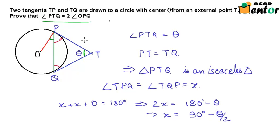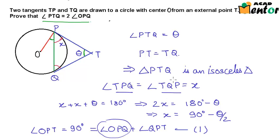Now this is the value of angle TPQ or angle TQP. Now we also know that angle OPT is equal to 90 degrees. This is because the radius and the tangent at the point of tangency form a right angle. So angle OPT is a 90 degree angle and we can see from the figure that angle OPT is nothing but angle OPQ plus angle QPT. And we just found out the value of angle QPT—QPT was x and we know the value of x. So from this particular equation, equation 1, we can easily find out the value of angle OPQ.